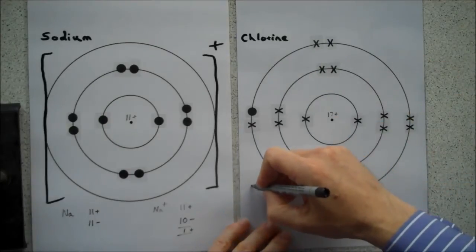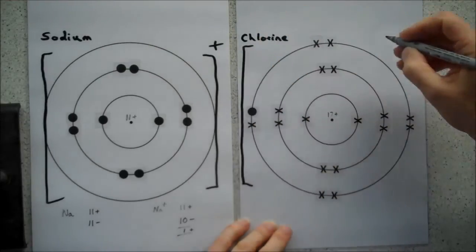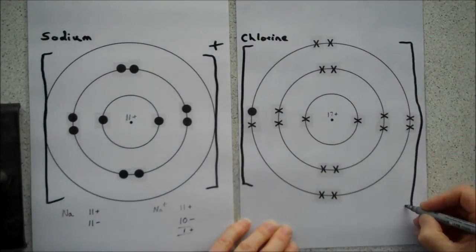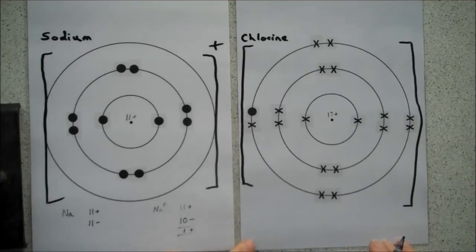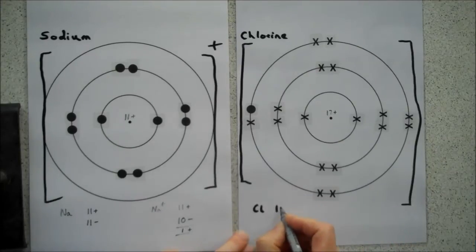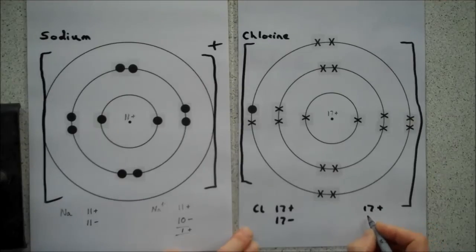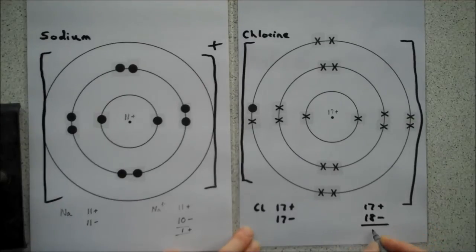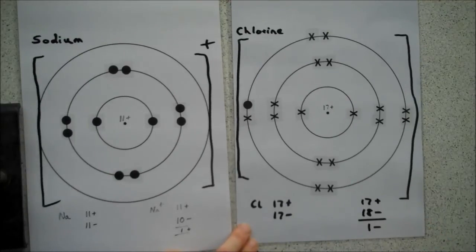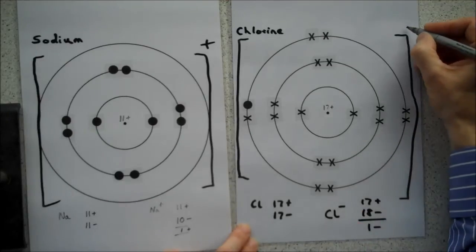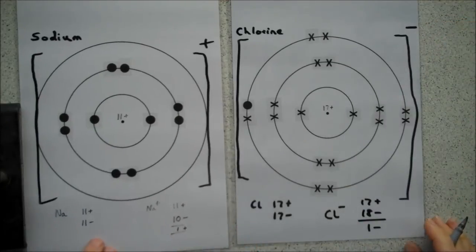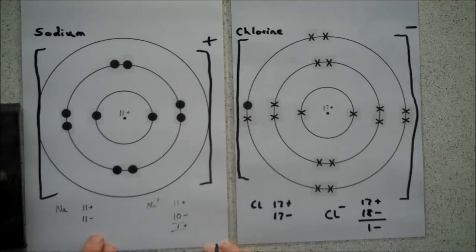The change that has happened now is that chlorine, because it's gained an electron, because it's gained something negative, it has become negative. Chlorine started off with 17 protons and 17 electrons. It's gained an electron, so now it has 17 protons and 18 electrons. Overall, it's got one more minus than it's got plus, so it's got a charge of minus one, which is why a chloride ion has a charge of minus one. So we'll write our charge there. And that is a dot cross diagram to show the bonding when sodium reacts with chlorine.